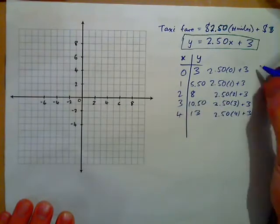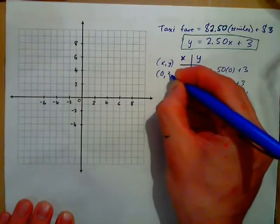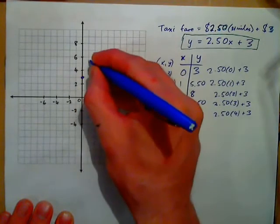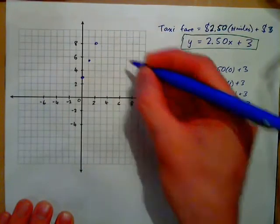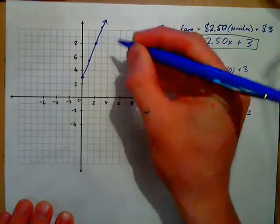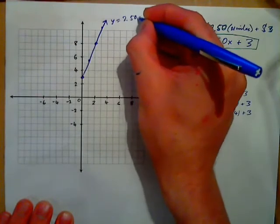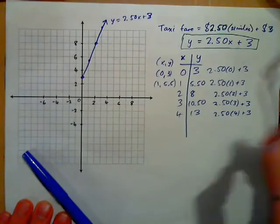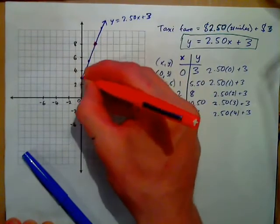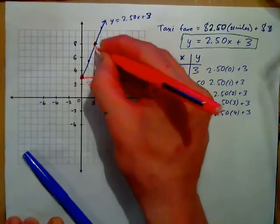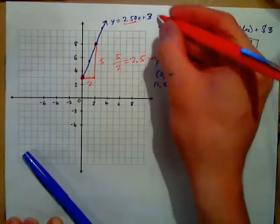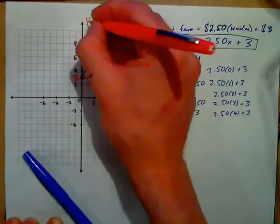If I plot the points, the ordered pairs are: (0, 3), (1, 5.50), (2, 8), (3, 10.50), and so on. Draw a straight line through those points and it should look like that. That's your equation: y equals 2.50x plus 3. A linear equation means it's a straight line. The 2.50 represents the slope — if I take two points, I run 2 and rise 5, so my slope is 5 over 2 which is 2.5. And my y-intercept is 3, where it hits the y-axis.